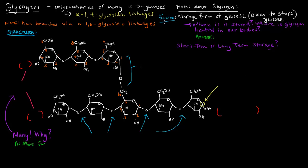What is glycogen's function? Glycogen is basically a storage form of glucose — it's a way to store glucose. Where in our bodies is it stored? Where is the glycogen located? It's located primarily in the liver and muscle. So basically, it stores glucose in a chain for energy that we can use. If there's too little glucose in our cell and we need to free up some glucose, then our bodies can start breaking down glycogen and free up glucoses that our cell can use.